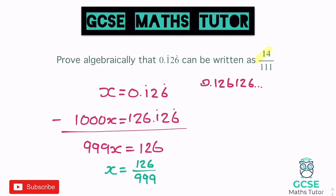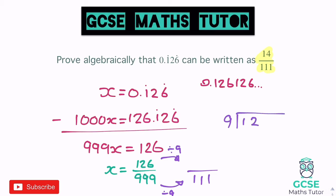The question wants us to write it as 14 over 111. The denominator needs dividing by 9 to get to 111. The numerator is less obvious, so let's show working out: 9 into 126 — 9 goes into 12 once with a remainder of 3, then into 36 four times — giving us 14. So 14 on top and 111 on the bottom: x equals 14 over 111. When it's not clear, it's really important to show that working out as we are proving the decimal equals that fraction.